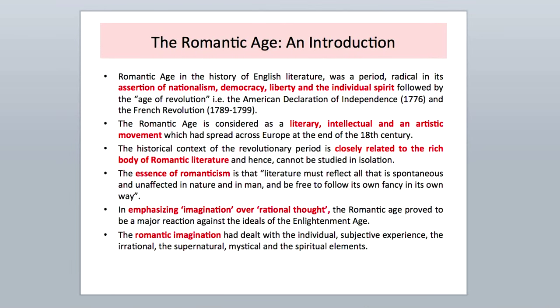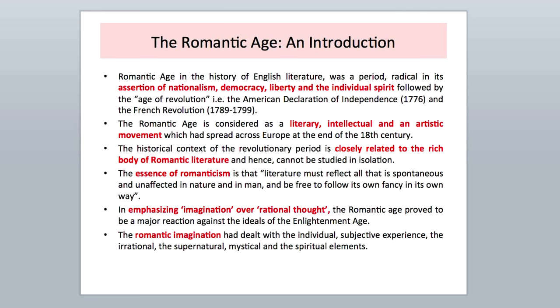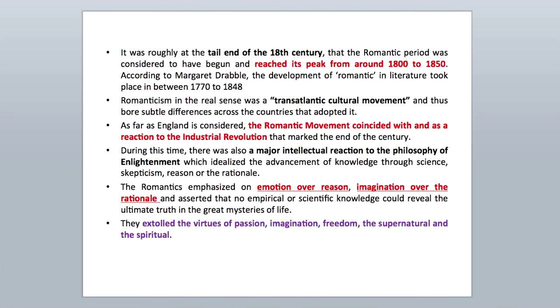The Romantic imagination dealt with the individual, subjective experience, the irrational, the supernatural, mystical, and the spiritual elements. It was roughly at the tail end of the 18th century that the Romantic period was considered to have begun, reaching its peak from around 1800 to 1850. These are just ways of marking time — it doesn't mean that this movement began exactly in these particular years, but it is considered to have begun around this particular period of time.